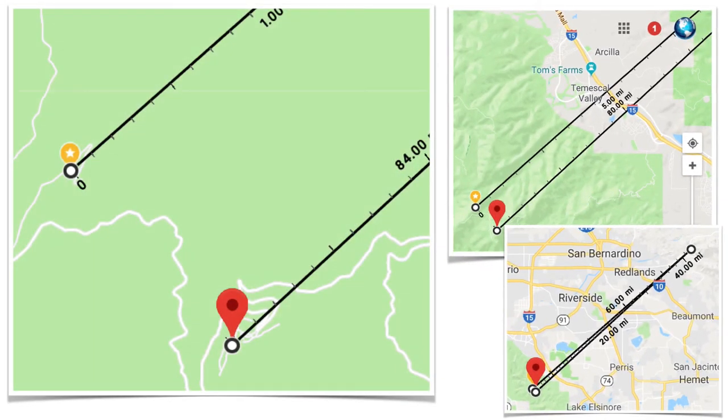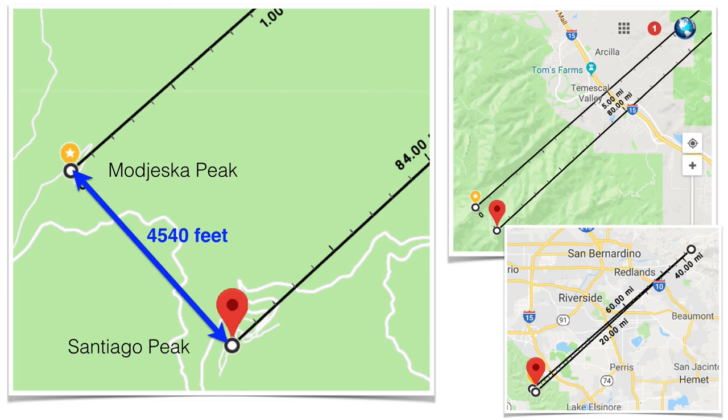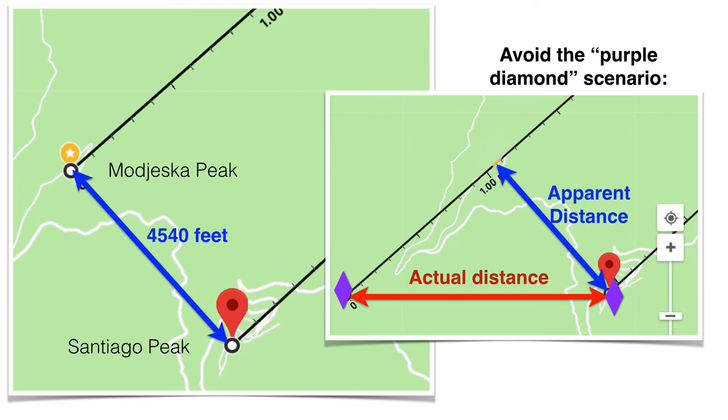So in red, we have Santiago peak. And then in yellow, the yellow star is Modeska. Now we can actually measure the distance between these mountains, about 4,500 feet. Now here's the thing that we want to avoid. We're very fortunate in this situation in that both mountains are the same distance, pretty close to the same distance away from the camera.